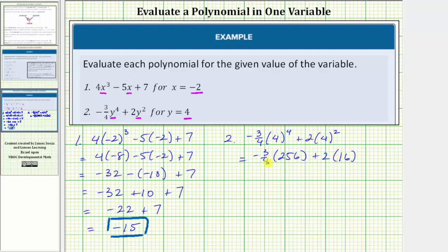Next we multiply, but notice we can simplify before multiplying because four and 256 share a common factor of four. As a fraction, 256 would have a denominator of one. There's one four in four and 64 fours in 256. So we have negative three times 64, which equals negative 192, plus two times sixteen equals 32.